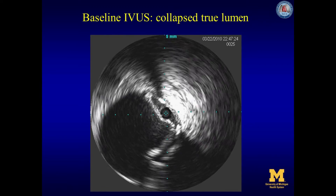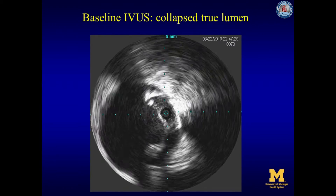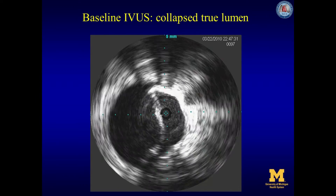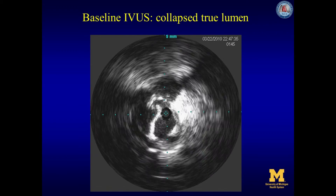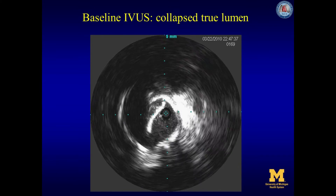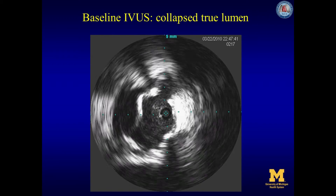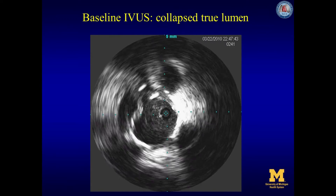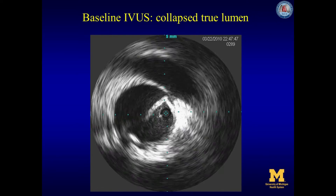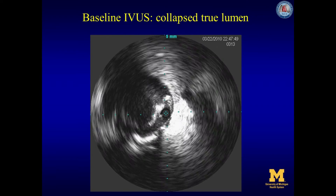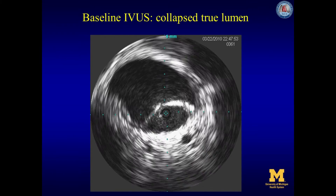A focused IVUS better oriented on the visceral segment shows the celiac artery coming off with the collapsed true lumen at 12 o'clock. The superior mesenteric artery comes off at 12 or 12:30 from the collapsed true lumen. The left renal artery comes off at the right side of the screen with the renal vein crossing the front of the aorta. The infrarenal aorta also shows a collapsed true lumen.